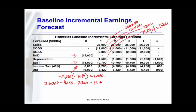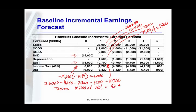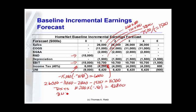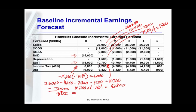The $10.7 million is the earnings before interest and taxes in a usual year. It's the revenue minus cost of goods sold, minus direct SG&A expenses, minus depreciation. Taxes are then applied, and unlevered net income is the final result — it's earnings before interest and taxes minus taxes.